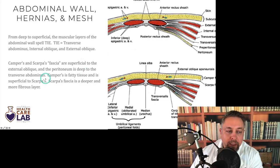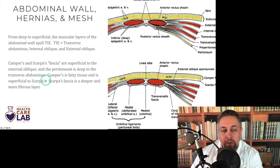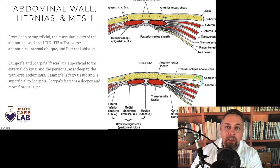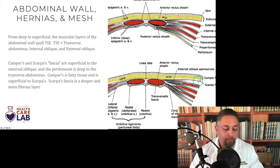Camper's is fatty tissue and is superficial to Scarpa's. Scarpa's fascia is a deeper and more fibrous layer, as you can see at screen right.